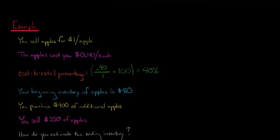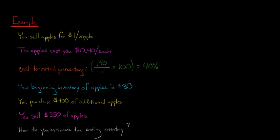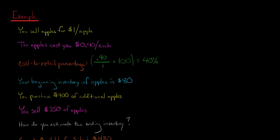So now we need to figure some things out. We need to say, how much inventory, without us having to count how many apples are left, how do we have some idea of what is the value in ending inventory of our apples, without doing a physical count of the apples? And you might say, well, maybe we just subtract out the $350, but we can't do that because remember, this $350 has been marked up. We don't sell the apples for what they cost. We sell them for $1 a piece even though they cost $0.40 each.